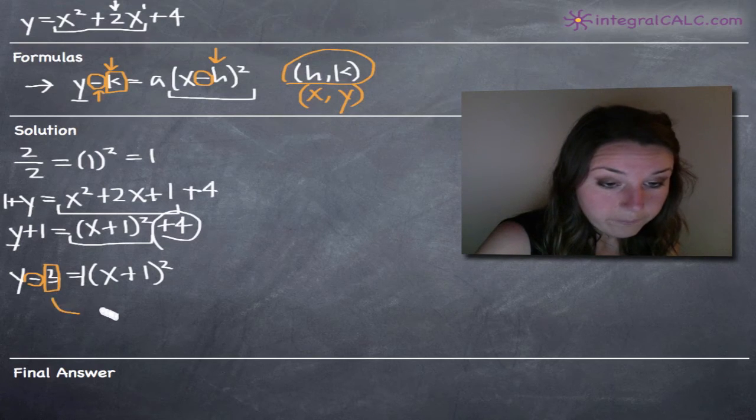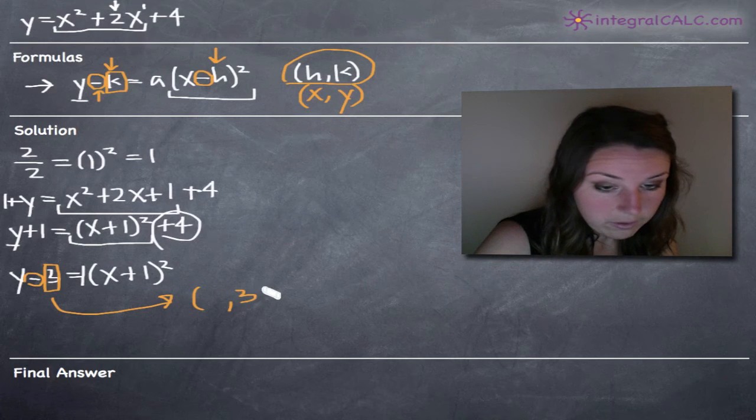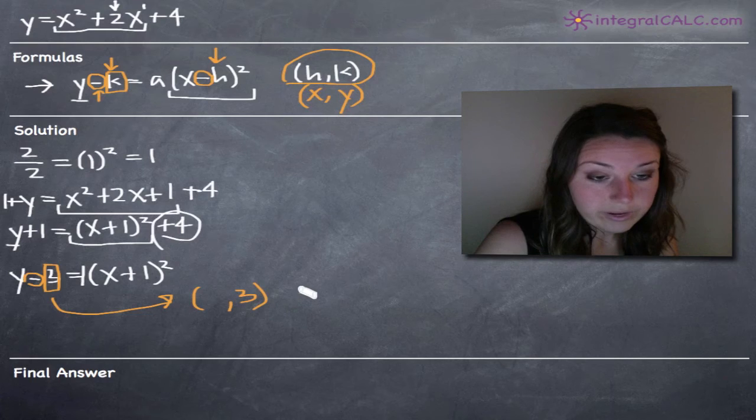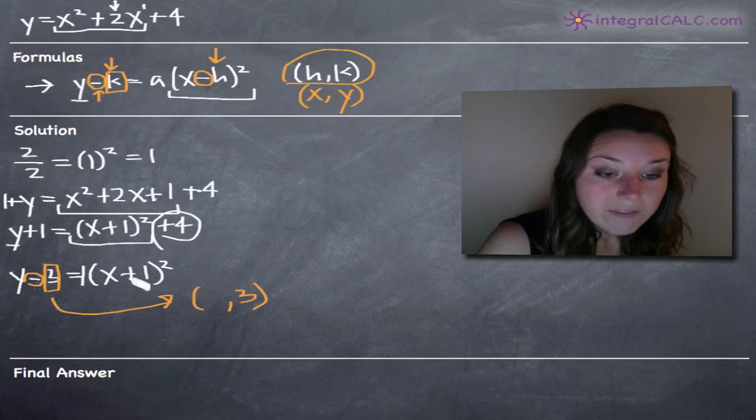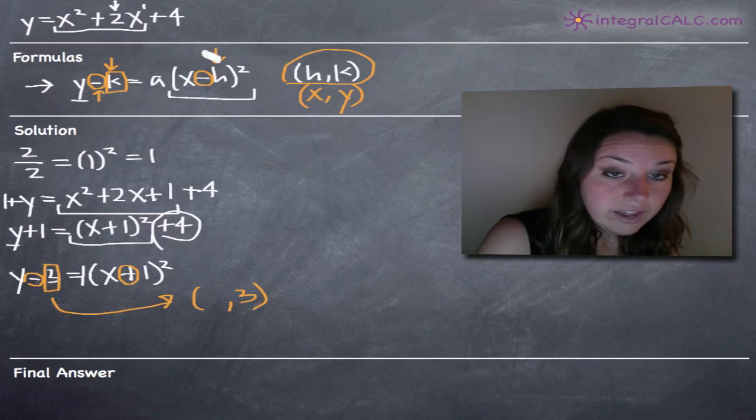So in our case, we can just pull out the three. So our vertex is going to be at something comma three.